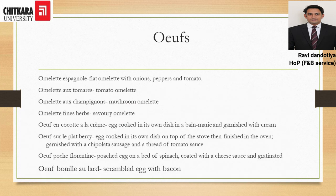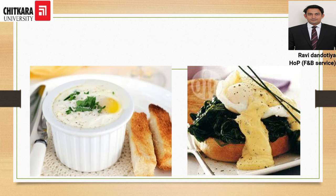The next course after potage is œufs, which means eggs. Eggs can be served in various styles of preparation — poached, scrambled, or other methods. Examples include omelette espagnol, omelette with tomato, omelette with champignon, omelette fines herbes, and others. In the images shown, on the left is an œuf en cocotte — cocotte being a type of cup in which it is served — and on the right is an omelette florentine, florentine being a French term for spinach.